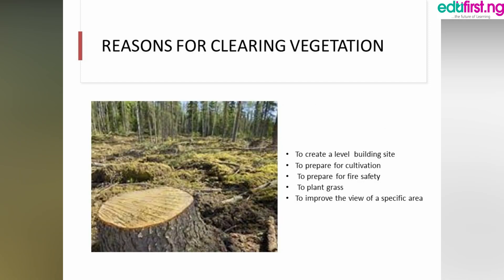There are several reasons for clearing vegetation, among which are: one, to create a level building site; two, to prepare for cultivation; three, to prepare for fire safety; four, to plant grass; and five, to improve the view of a specific area. Vegetation clearing involves removing all existing vegetation, rocks, and debris from the land in order to create a level building site. In some cases, land clearing is also done to prepare for cultivation, fire safety, to improve the view, or to plant grass.